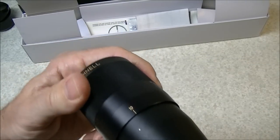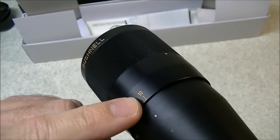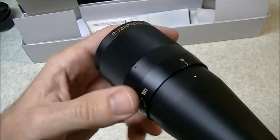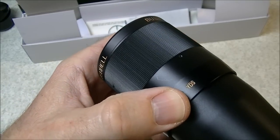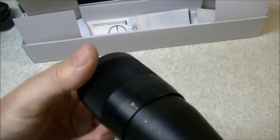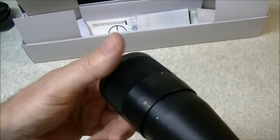So this scope is adjustable for parallax to a very short distance, 10 yards. I'm not sure if these are in meters or no sorry I'm wrong it is in yards it says so right there. So we can adjust this down to 10 yards so obviously they've considered using this for air rifles and so forth.